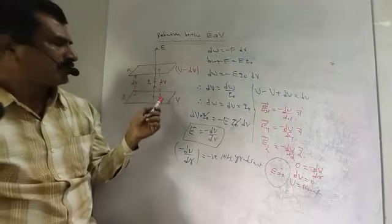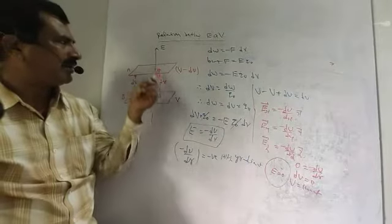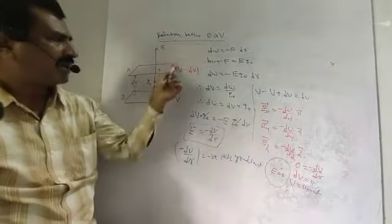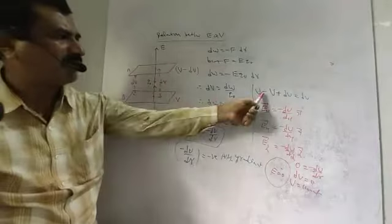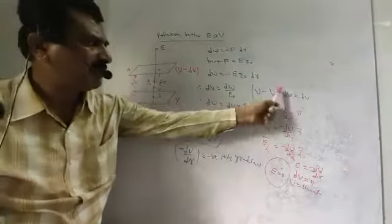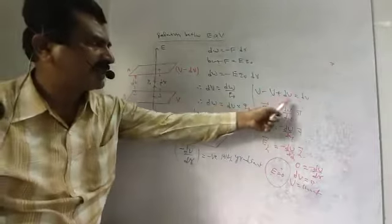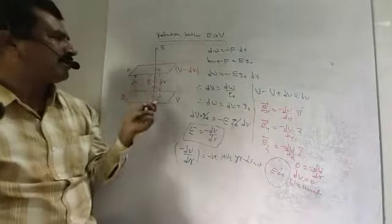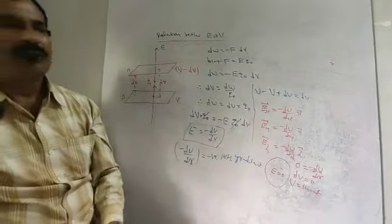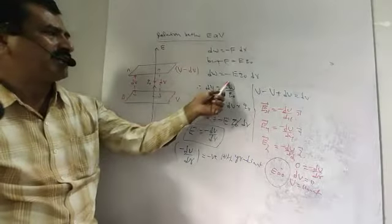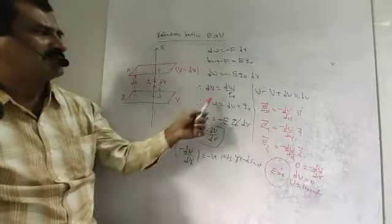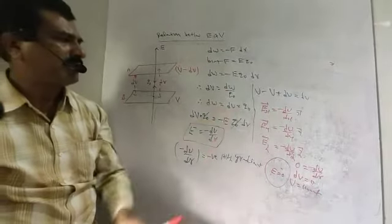Here, surface B has potential V and surface A has potential V minus DV. The potential difference between the two surfaces is DV. We know the equation for potential difference: DV equals DW divided by Q0. Rearranging, DW is equal to DV into Q0.